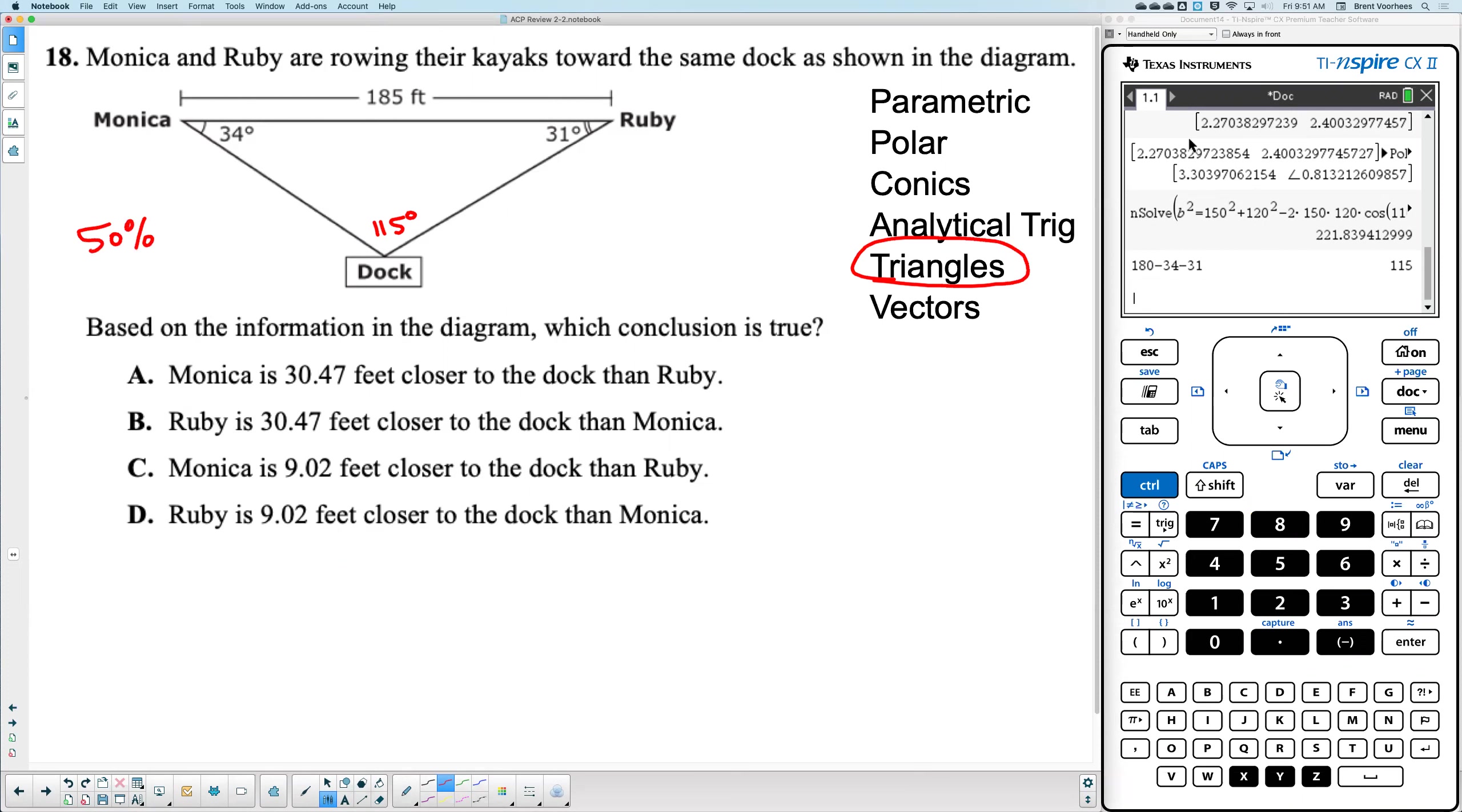Okay, are we going to use law of sines or law of cosines? Daisy, what do you think? Sines. Why sines? Do we have a pair? What's our pair? 185 and 115. Perfect.